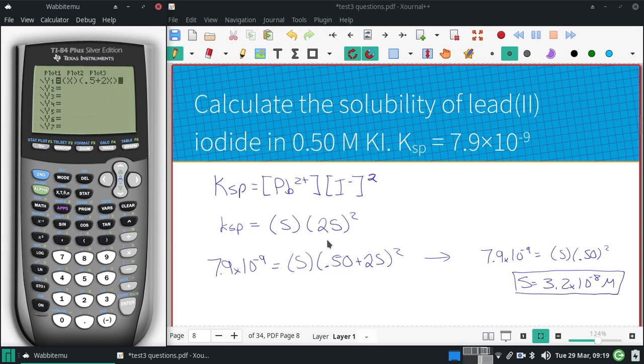So, I'm putting x's instead of the s's. And then minus 7.9 times 10 to the negative ninth. And graph it, and then calculate a zero that is larger than zero.